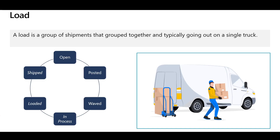Let's first define the load. The load is a group of shipments that are grouped together and typically going out on a single truck. We can consider the load as the object that will be used to transport the delivery. This could be a shipping container, single truck, rail car, or any other mode of delivery.